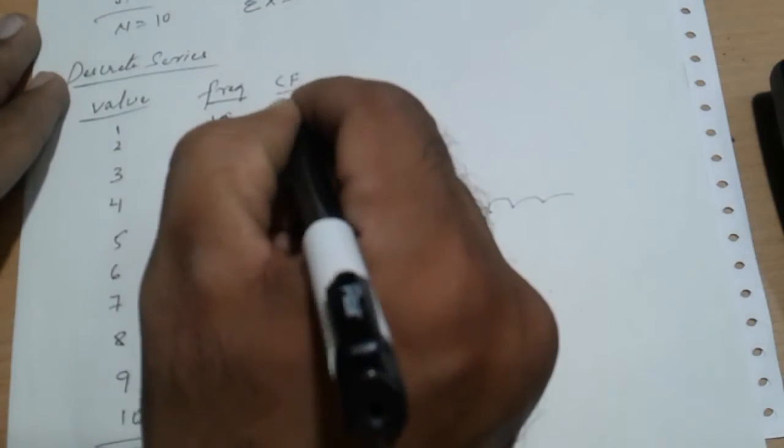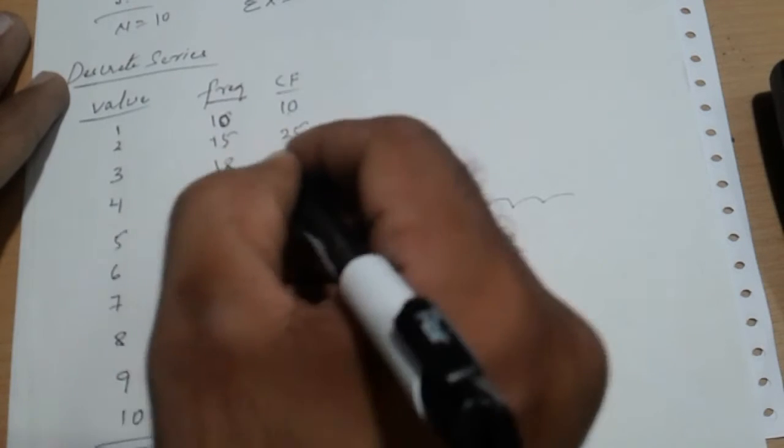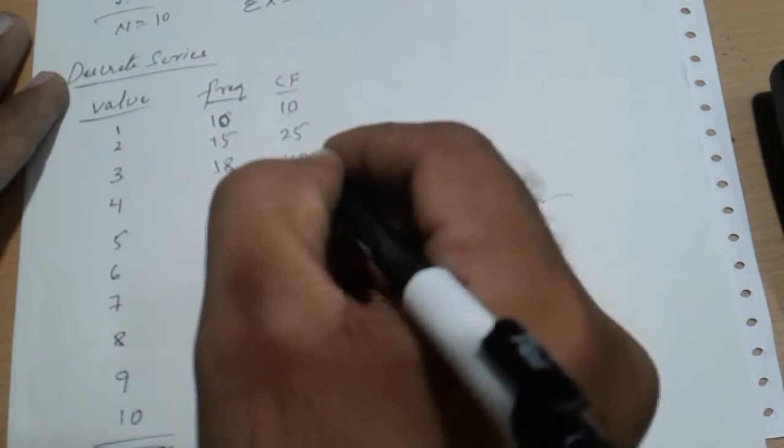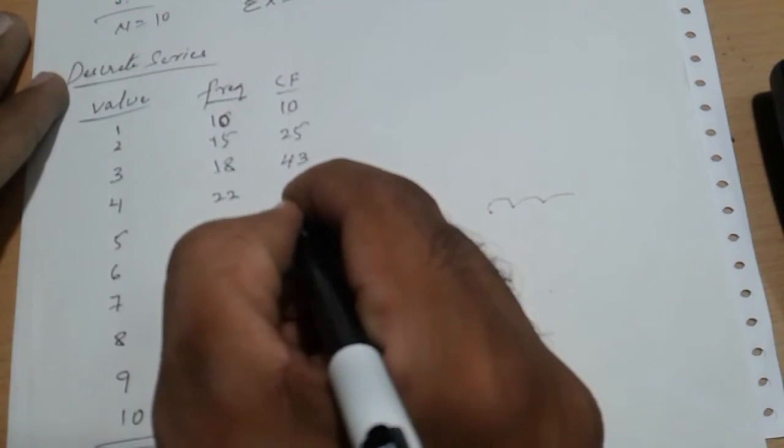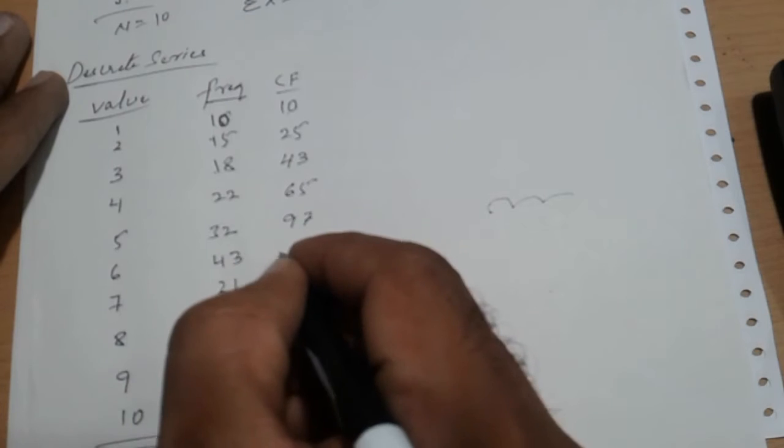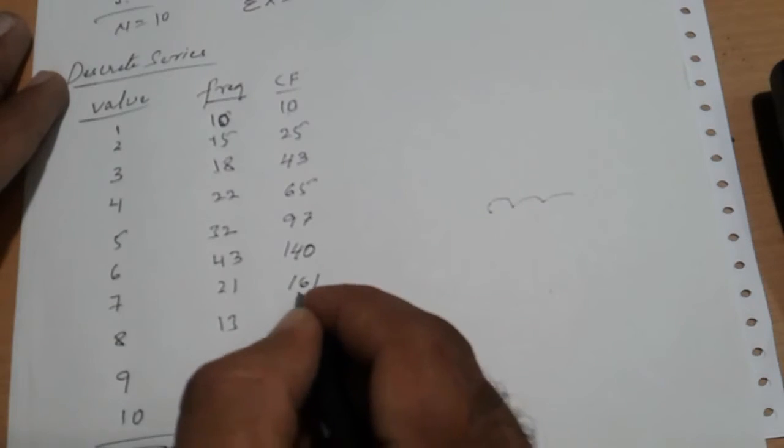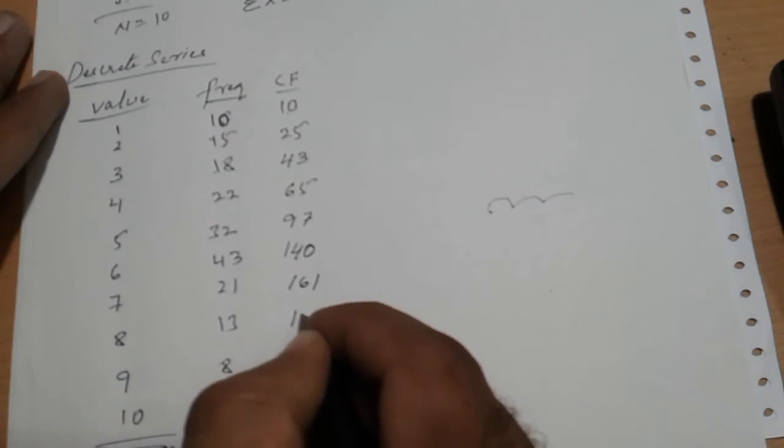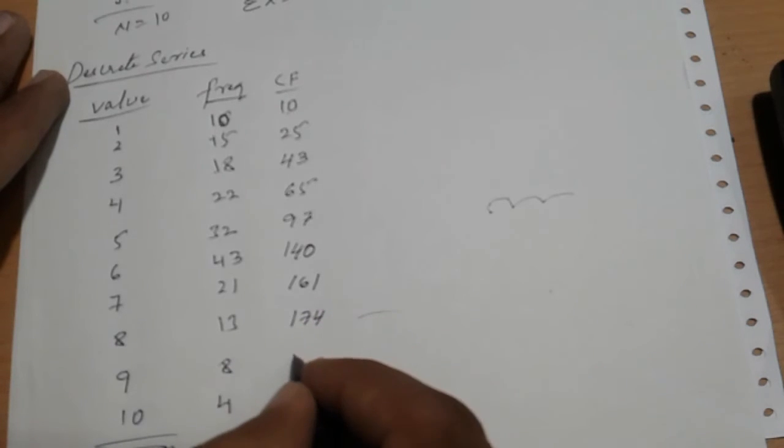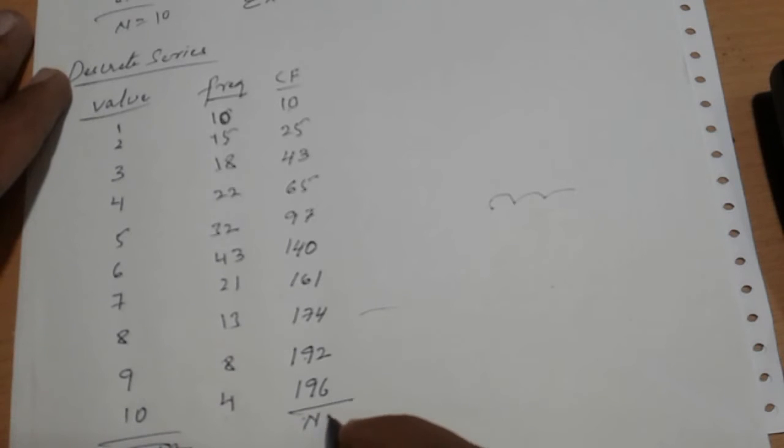Now, add this one. 10 as it is: 10. 10 plus 15: 25. 25 plus 18: 43. 43 plus 22: 65. 65 plus 32: 97. 97 plus 43: 140. 140 plus 21: 161. 161 plus 13: 174. Plus 8: 182. If you add, 192. Then 196. 192 plus 4: 196. Overall, total N is equal to 196.